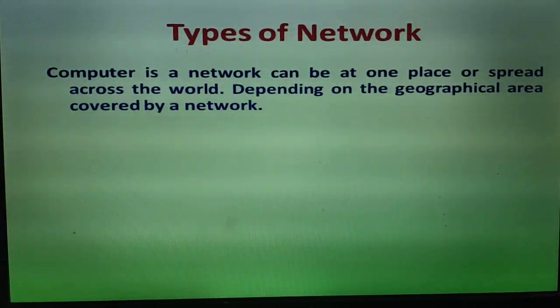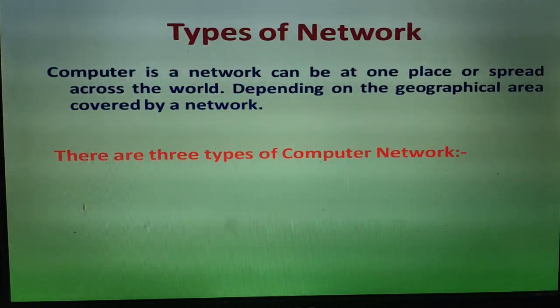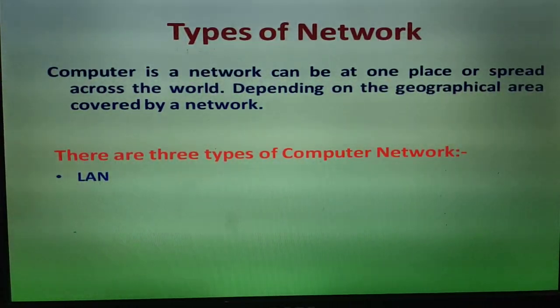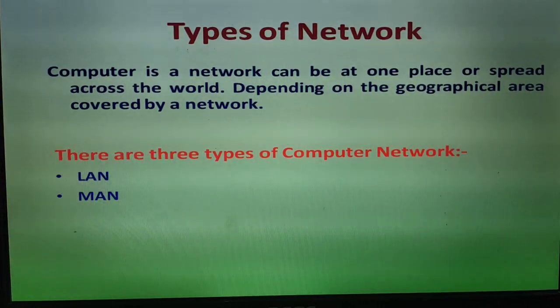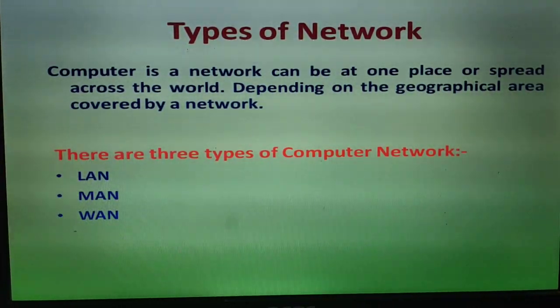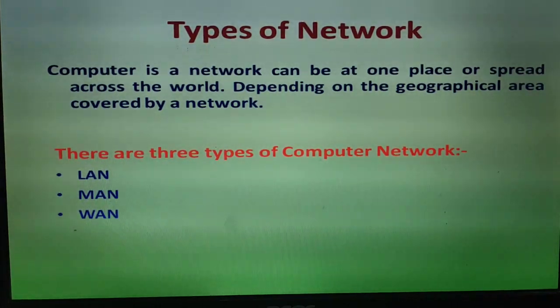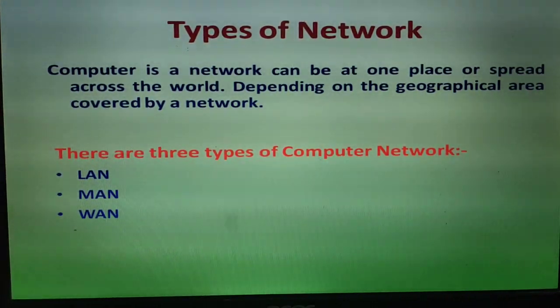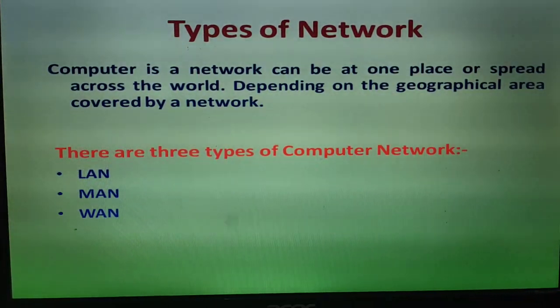There are three types of computer network. First is LAN — Local Area Network. Second is MAN — Metropolitan Area Network. Third is WAN — Wide Area Network. These are the three types of network we use in a computer. Now we will discuss them one by one.